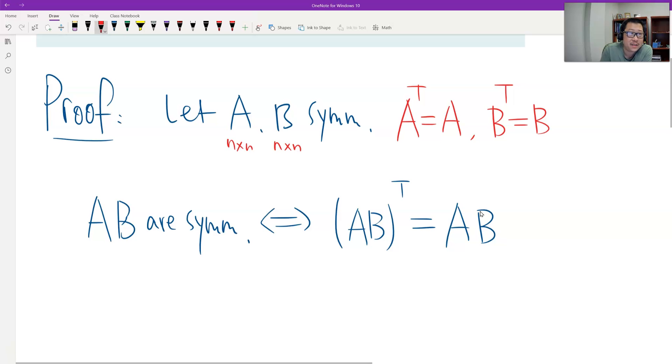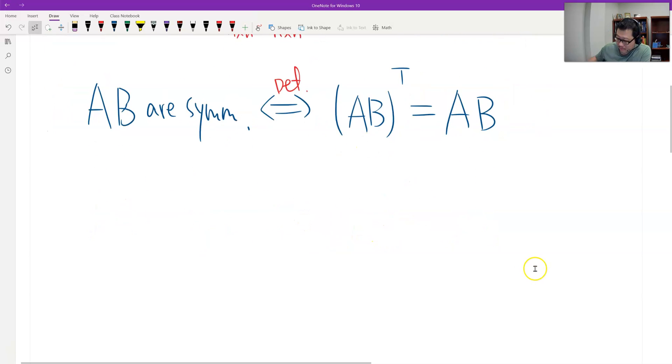So here is the definition. That's definitely true. And then by the property, I can look at it. And this is equivalent to transpose of B times the transpose of A equals A times B.